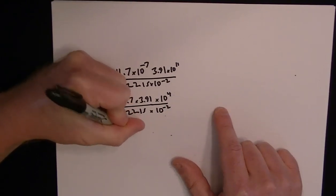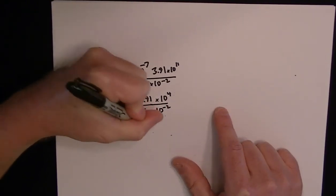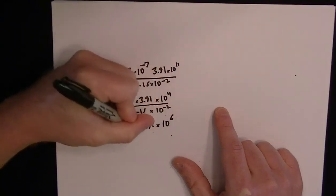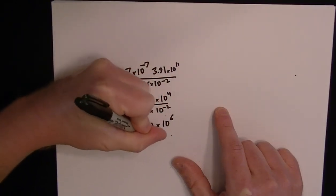So I'll write that step down. 41.7 times 3.91 times 10 to the 6, and then we still divide it by 22.15.